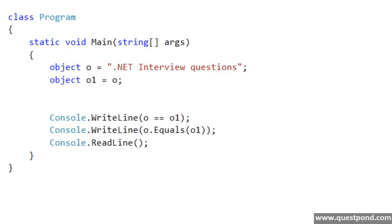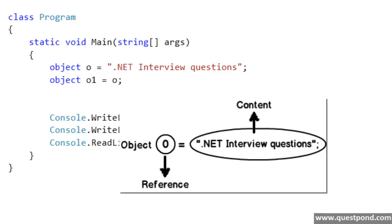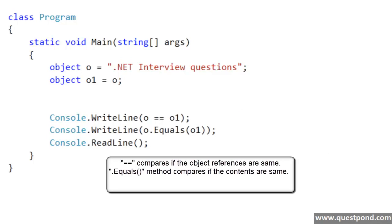When we create any object there are two parts to that object. One is the content of the object and the other one is reference to that content. For example, on your screen I have a simple object called O which has a content .NET InterviewQuestions. .NET InterviewQuestions becomes the content and O becomes the reference to that content. The equal to equal to sign compares if the object references are same, while the dot equals method compares if the contents are same.